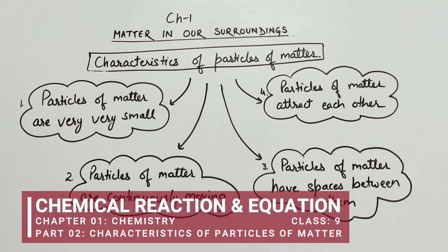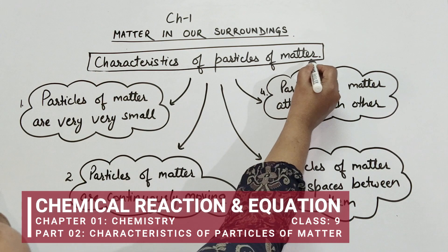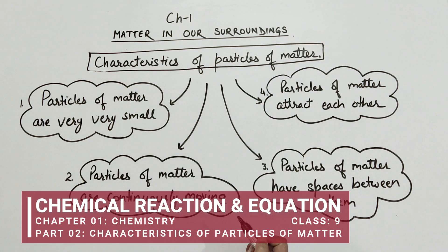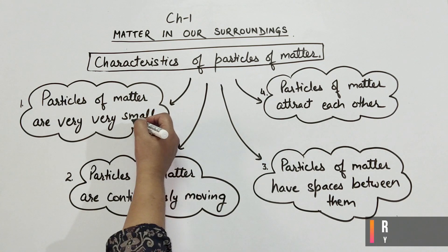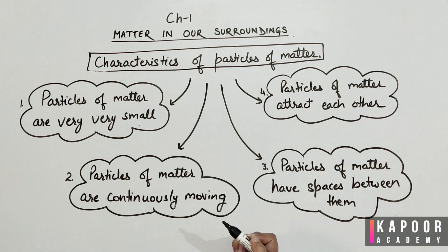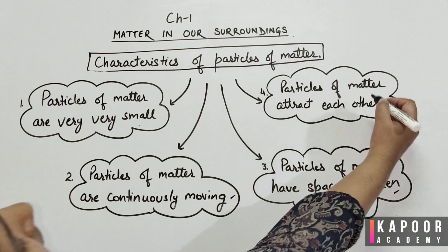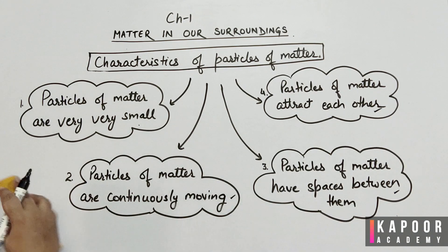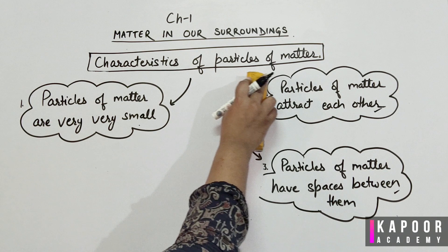Hello students and welcome back to the second lecture of Chapter 1, Class 9 Chemistry. Today we will study the characteristics of particles of matter. These are: particles of matter are very very small, particles of matter are continuously moving, particles of matter have spaces between them, and particles of matter attract each other.